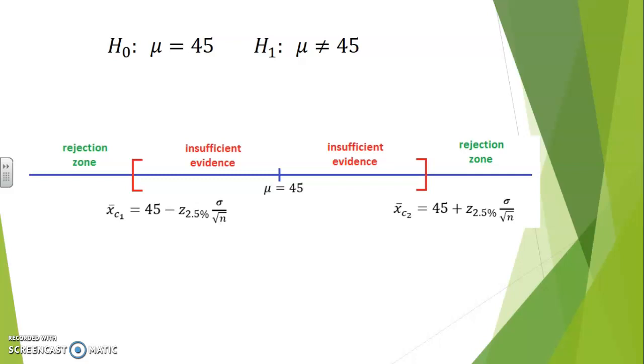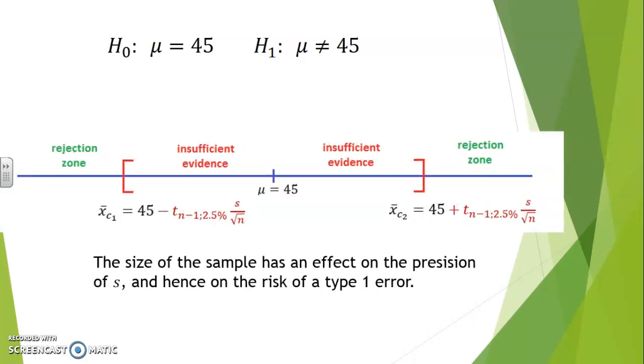In fact, we're not even sure mu equals 45 is accurate, although we are assuming it is until proven otherwise. And therefore, the best thing we can do, or the closest thing to exact, is to replace sigma by S. However, even S is likely to be erroneous. And therefore, we will switch the type of probability distribution from a Z-distribution to what is called a student T-distribution. T n minus 1, 2.5%, will take into account the likelihood that S itself has some errors of estimation in it. So the size of the sample has an effect on the precision of S and hence on the risk of a type 1 error.